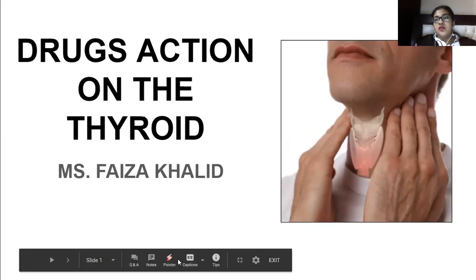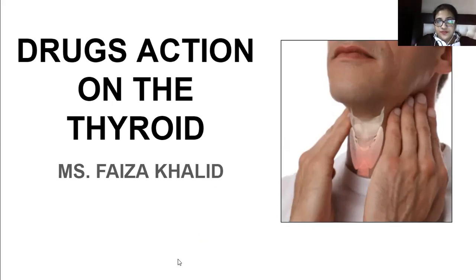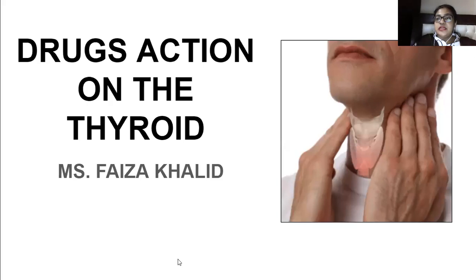The hypothalamus releases thyroid-releasing hormone (TRH). From the hypothalamus it goes to the pituitary gland, which releases TSH — thyroid stimulating hormone. Finally the thyroid gland is stimulated and produces thyroid hormone.